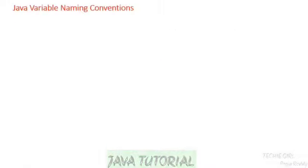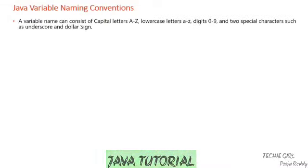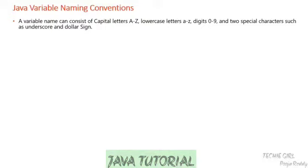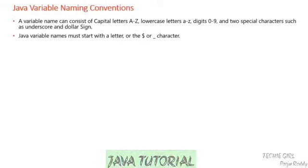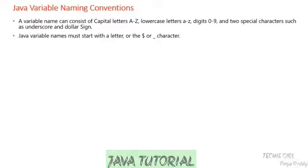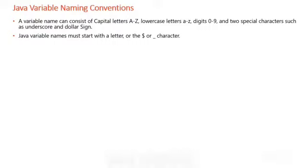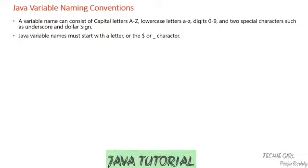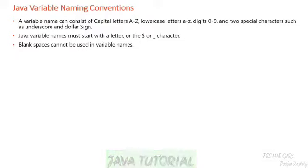Now let's see the naming conventions of Java variables. Java variable names can consist of capital letters, lowercase letters, digits, and special characters. However, when starting a variable name, you must start with a letter, underscore, or dollar sign only. You cannot start a variable name with a digit or any special character other than dollar and underscore.